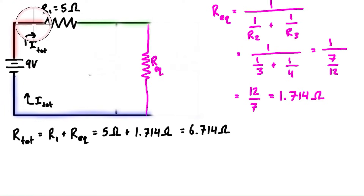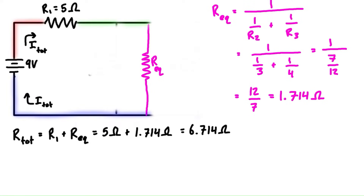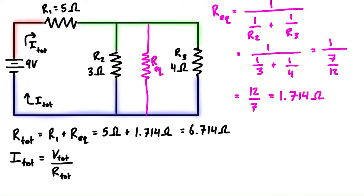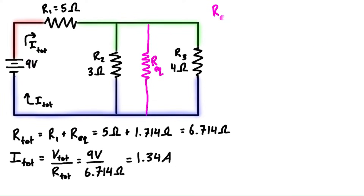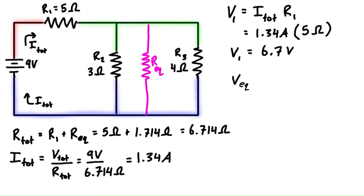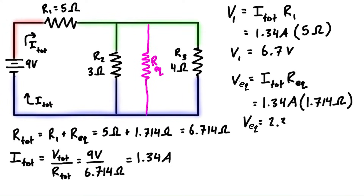Current comes out of the battery, through this resistor, through the equivalent section, and back again. The expression for that is V equals IR, and we can rearrange that for current to find the total current as 1.34 amps. Then we can apply Ohm's law one more time to find the voltage drop across resistor 1, which is 6.7 volts, and the voltage drop across the equivalent resistor from the green node to the blue node, which is 2.3 volts.